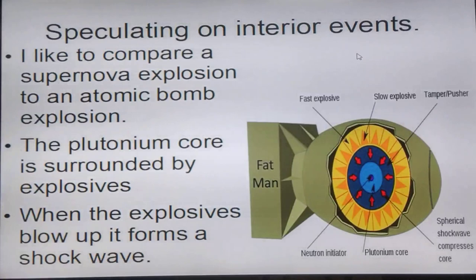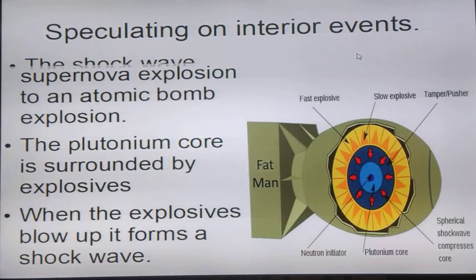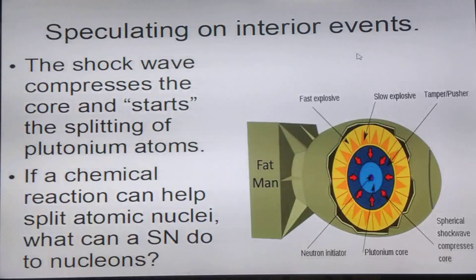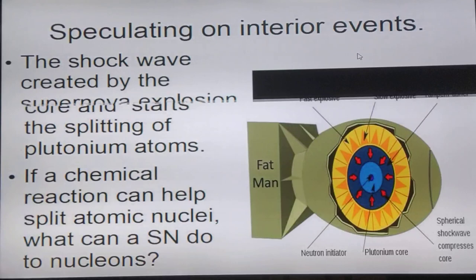In an atomic bomb, the core is surrounded by explosive, and the core is either plutonium or uranium 235. When the explosive blows up, it forms a shock wave, and the shock wave compresses the core and starts the splitting of plutonium atoms. So the question now becomes, if a chemical reaction can help split atoms, what can a supernova do to the nucleus of atoms or to protons and neutrons themselves?